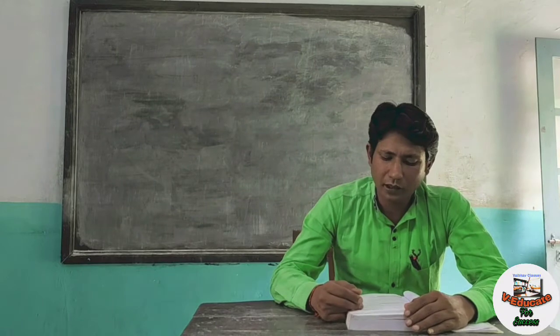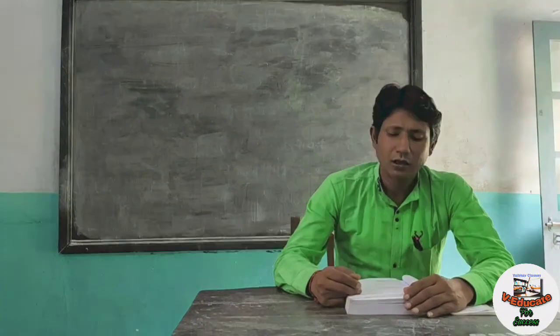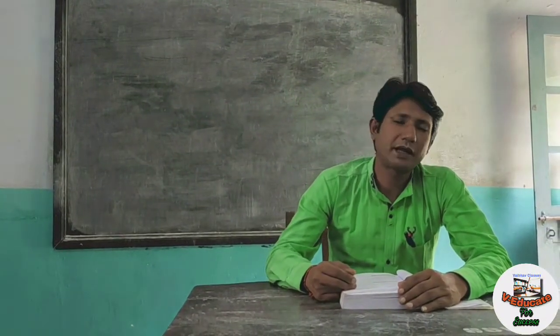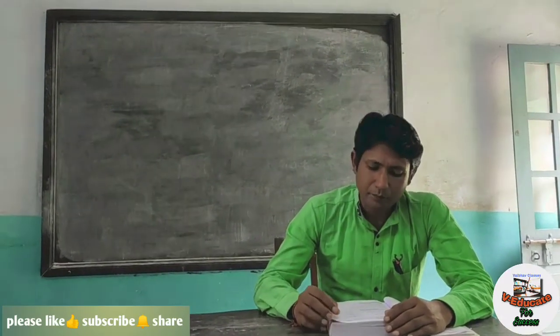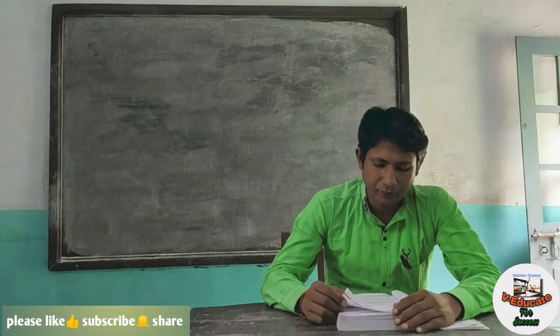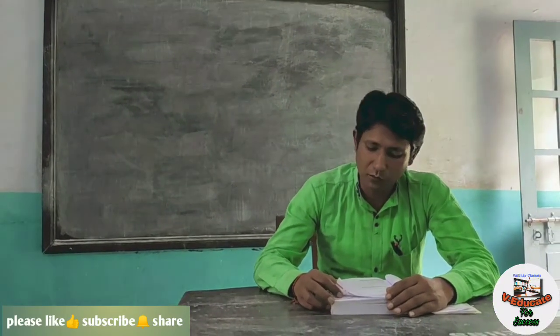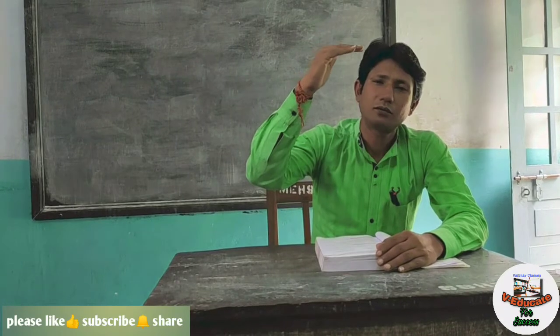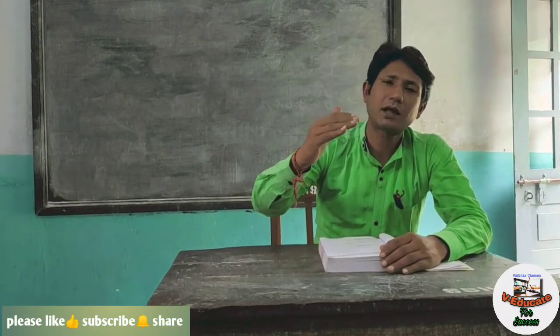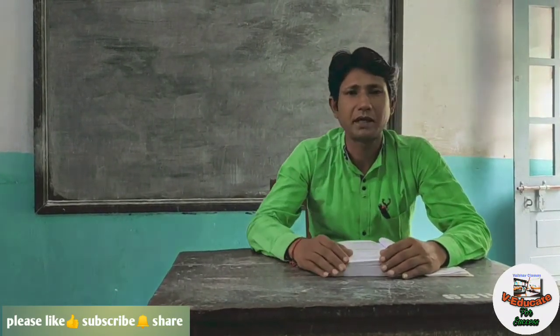On which system do non-trading organizations keep their accounting records? — Cash system। Opening capital balance sheet की liability side पर लिखी जाती है। Income and Expenditure Account किस account की help से बनाया जाता है? — Receipt and Payment Account की help से। पहले Receipt and Payment Account बनता है, उसकी सहायता से Income and Expenditure Account, and after that we prepare Balance Sheet.